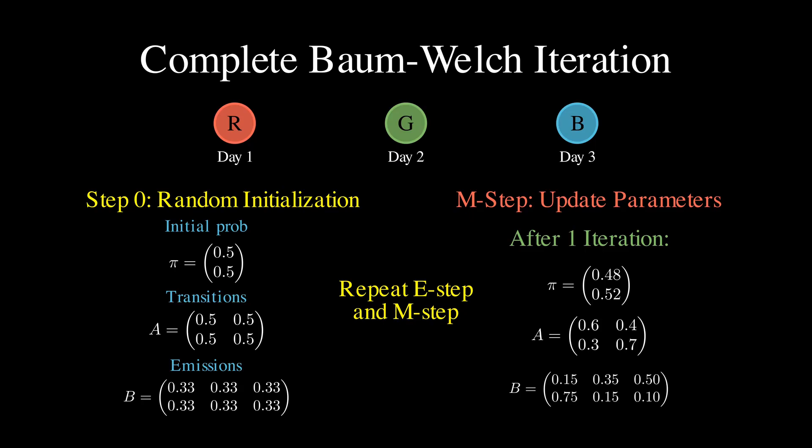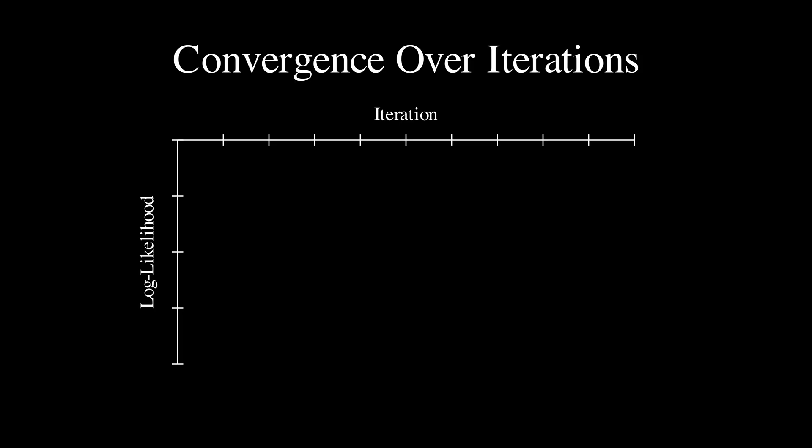We keep cycling through E-step and M-step, and with each iteration, our parameters get closer and closer to values that truly explain our observed data. Eventually the algorithm converges, meaning the parameters stop changing significantly between iterations. At that point, we found a good set of parameters that fit our observations.